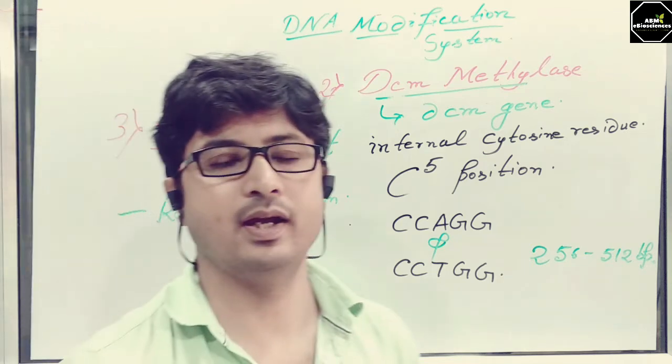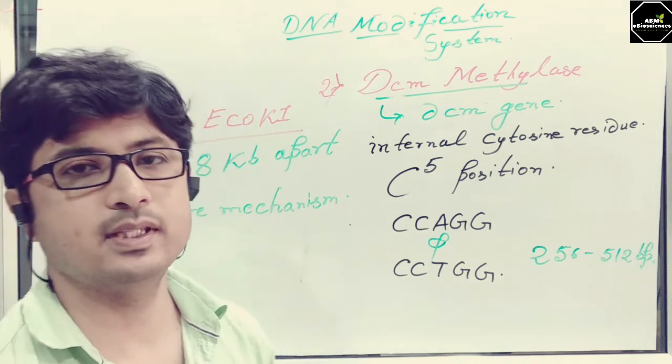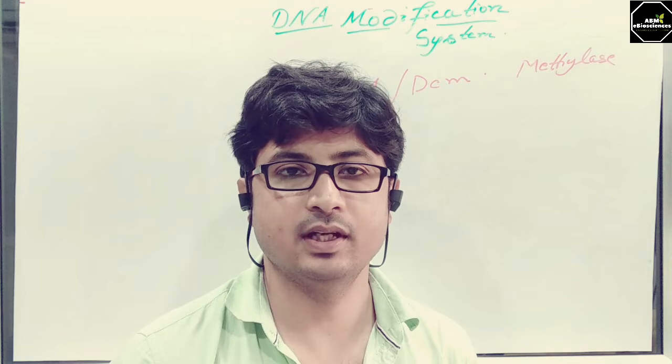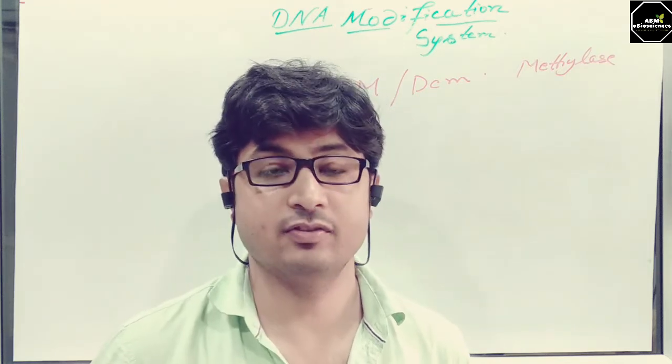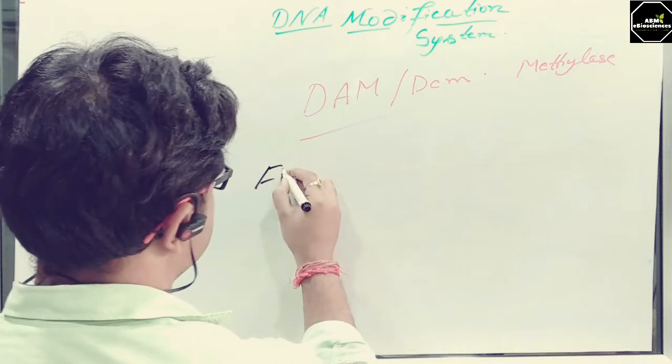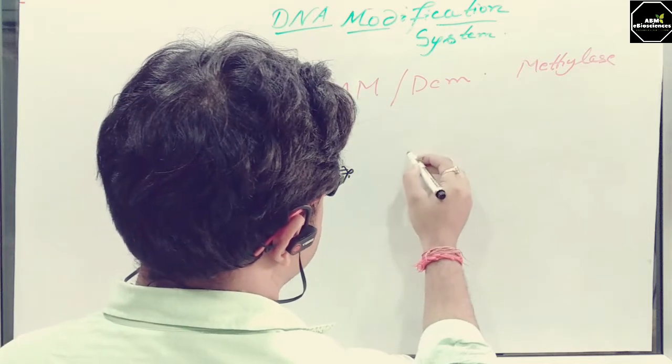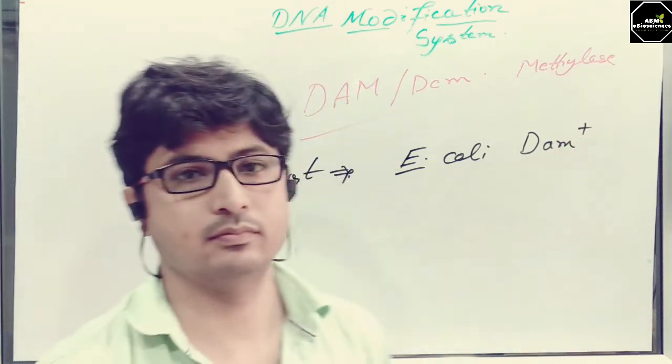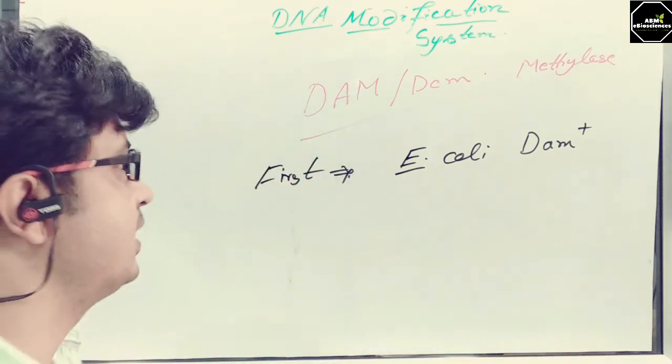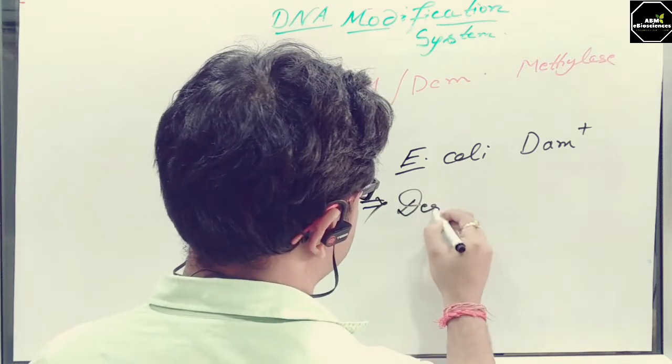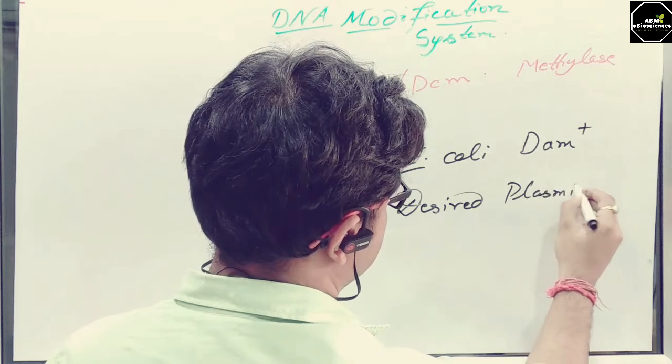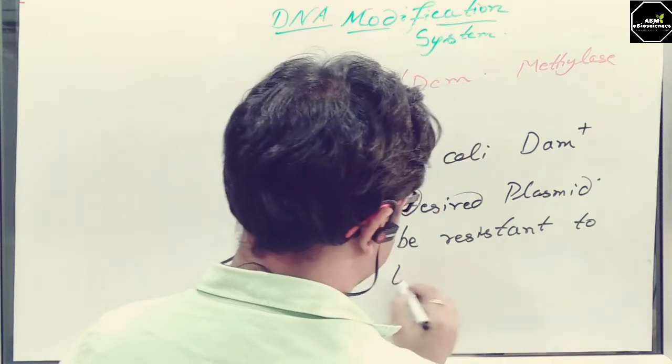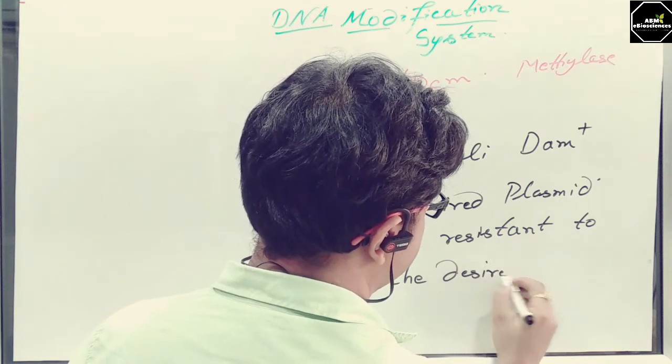Mostly, we will be talking about the DAM and DCM methylase system. Why this DAM and DCM methylase is very important when you are studying what you are going to do for gene cloning activities? If you take the first reason, suppose E. coli strain is a DAM positive. If you are isolating the genome from that bacteria which is DAM positive, there is a chance that the desired plasmid may be resistant to the desired restriction enzyme.